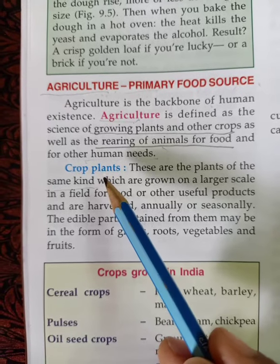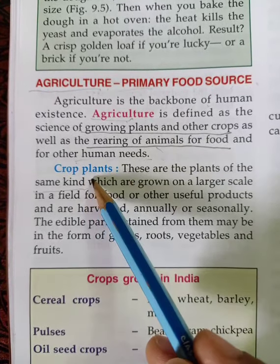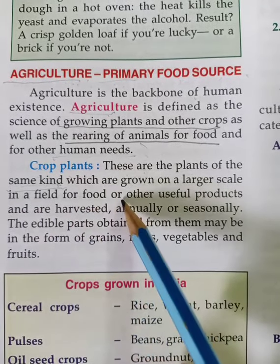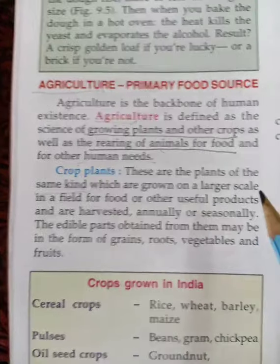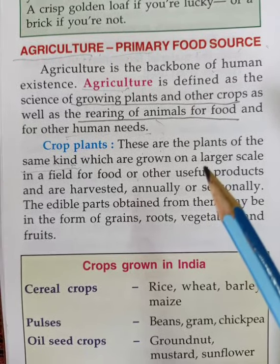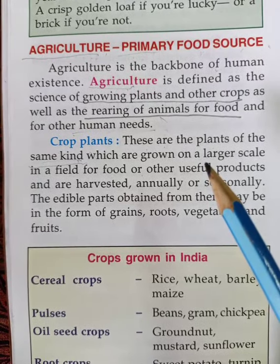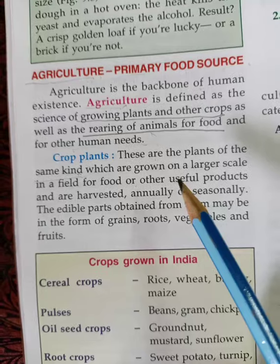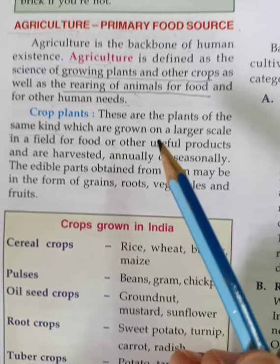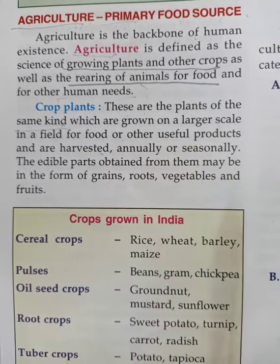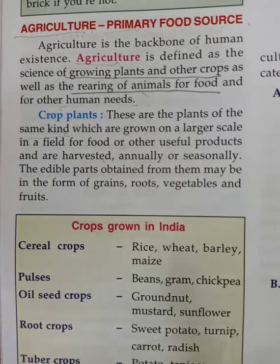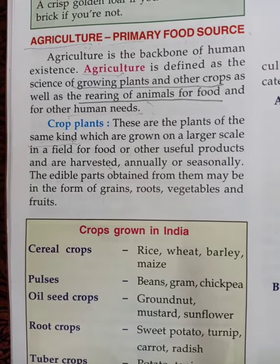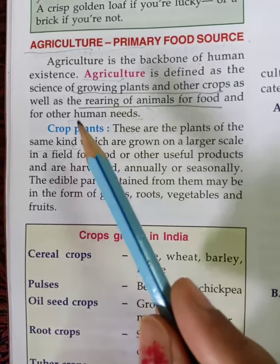Crops are plants of the same kind which are grown on a larger scale in a field for food and other useful purposes. If we want to grow rice in December, we are not able to grow it because it is a seasonal crop — it is harvested and sown at particular times. It can only be grown during the rainy season after water collects in the field, and it is grown on a large scale. Such plants are called crops.